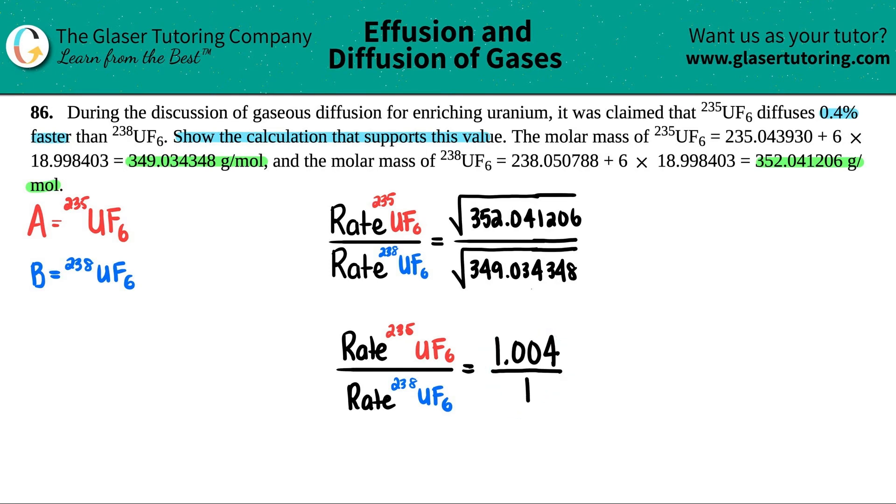And now the numerator goes with the numerator and the denominator goes with the denominator. So it makes sense that the 235UF6 has a higher number because it weighs less. And in this case, it says that the rate is 1.004 times faster than this.